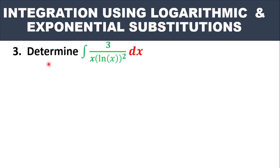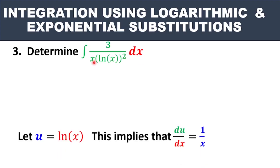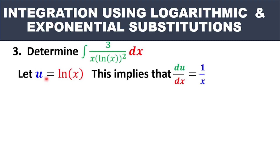Let's move on to the third example: determine the integral of 3 over [x · (ln x)²] dx. The question is: which one should be our U? If I pick x as my U, when I find its derivative I get 1, and 1 will not cancel this x. How about if I pick ln x as my U? When we differentiate ln x, we get 1 over x, and that x can easily cancel this x. So the right U to pick is ln x.